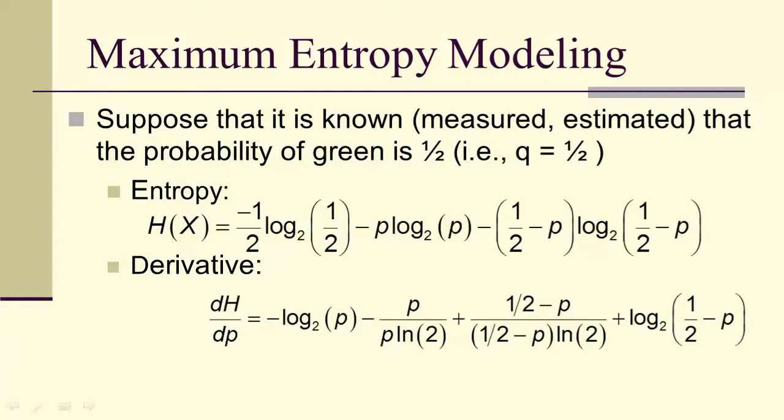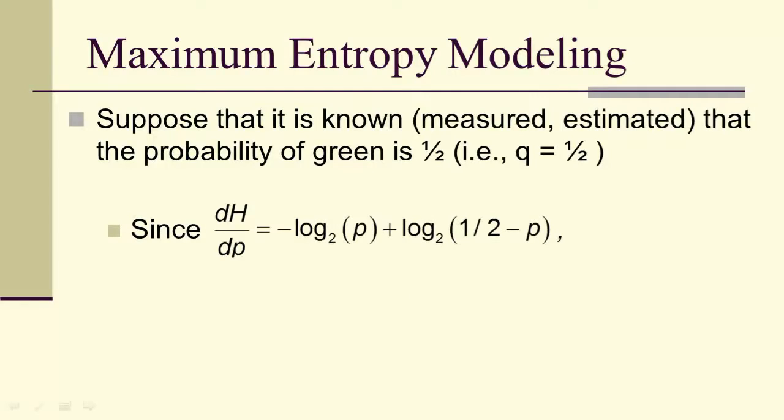...and then minus p times the derivative of log base 2 of p, which is p/(p ln 2). And similarly, notice that the middle terms—the numerator and denominator have a common factor that cancels, and then the two are the negatives of each other, so it simplifies to this expression.